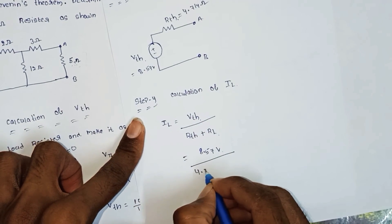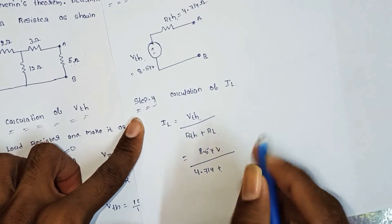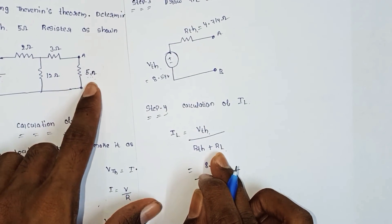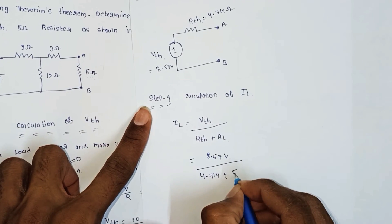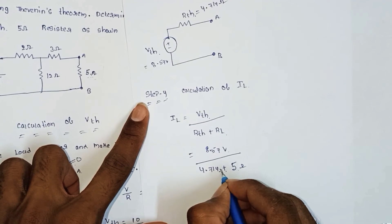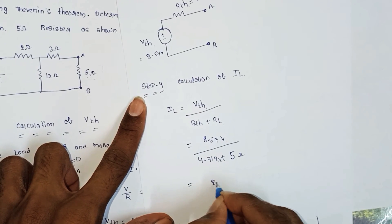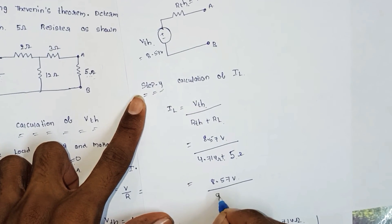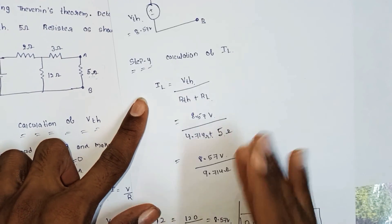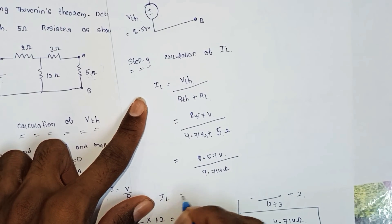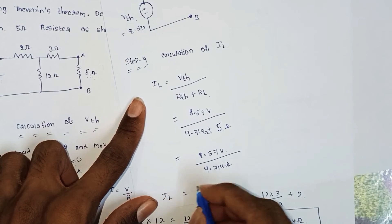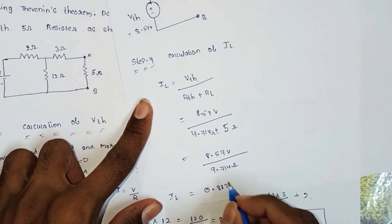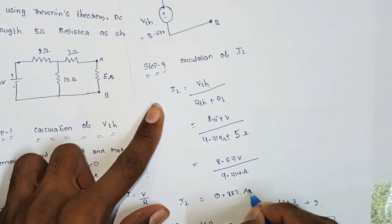RTH equals 4.714 ohms, and the load resistance RL is 5 ohms. So IL equals 8.57 divided by (4.714 plus 5), which is 8.57 divided by 9.714. The load current IL equals 0.882 Amperes.